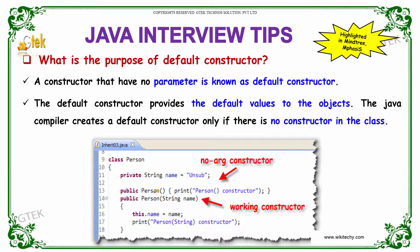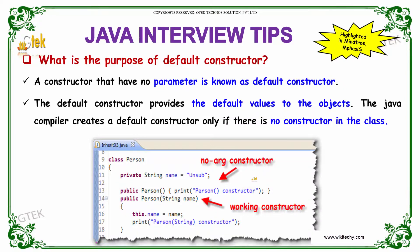If you see over here, we have a default constructor for the class Person, because we don't have any argument to be passed for Person. Whereas in your second constructor, it has a parameter — you have to pass a name. So that is not a default constructor; that is a parameterized constructor.